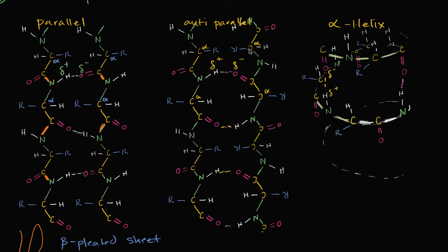Or if they're oriented the other way, this one's going nitrogen, alpha carbon, carbonyl carbon. This one's going carbonyl carbon, alpha carbon, nitrogen. Well, now you have an anti-parallel beta pleated sheet. And once again, this is interaction of the backbone.